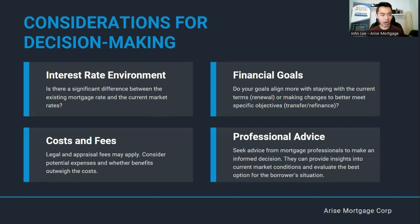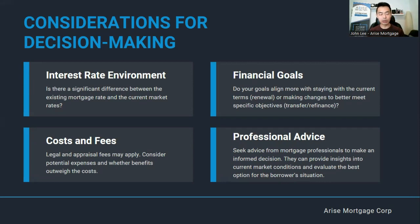Number one: figure out what the interest rate environment is. Speak to a professional because every time you renew a mortgage, it's based on the current rate, and so many things based on the economy will affect the rate — you need to know what it is and what could happen in the future. Number two: costs and fees. If you do a transfer or refinance, there are legal fees and appraisal fees involved — around $1,000 or so. Consider this as part of the calculation. Despite getting a lower rate, make sure the fees are included so that even with them, you're still ahead and it makes the transfer worthwhile.